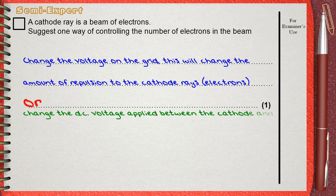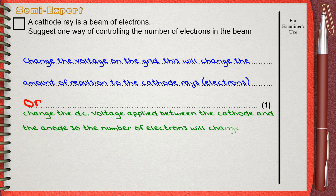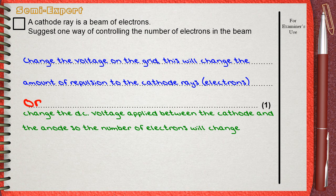Another possible answer that can replace this one: Change the DC voltage applied between the cathode and the anode, so the number of electrons will change.